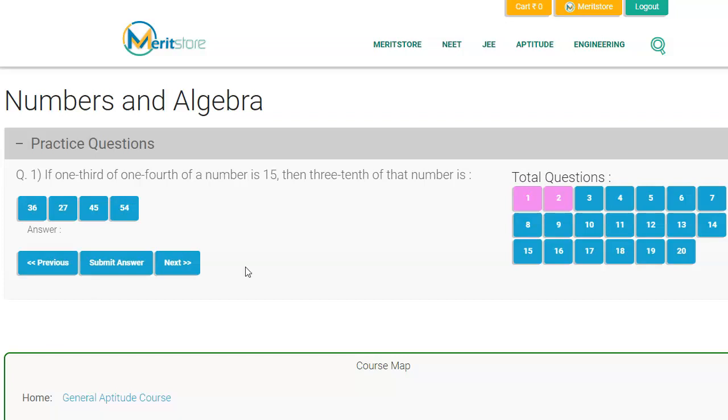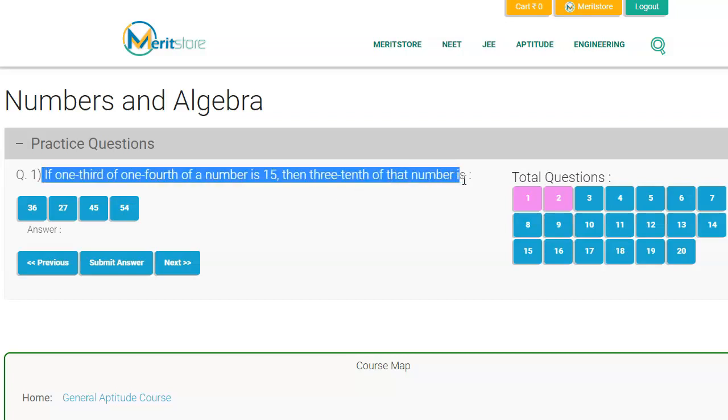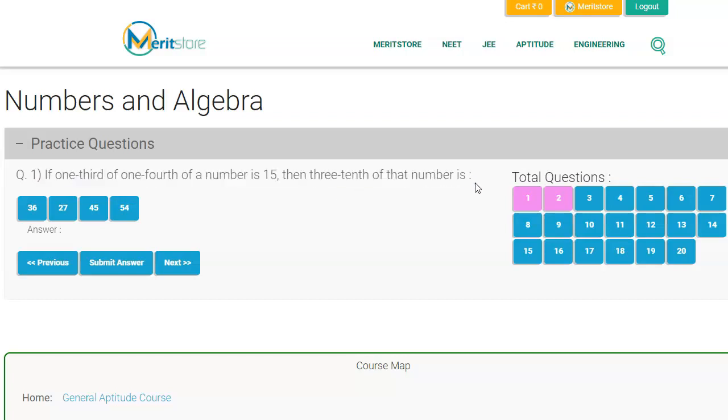So as I said before, you need to be good at forming equations. So this is a question from our practice questions. If you are watching this video on YouTube, the link is in description. If you are watching this video on MeritStore website, then you can go down and start solving these questions. So if 1 third of 1 fourth of a number is 15, then 3 tenth of that number is.